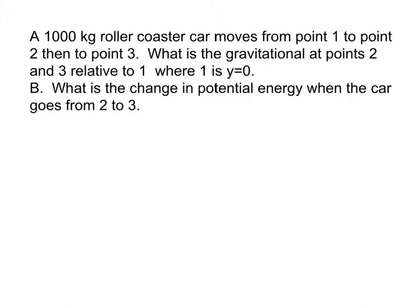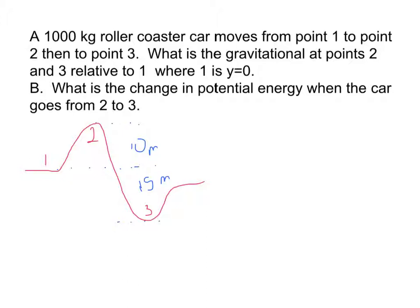A 1000 kg rollercoaster moves from point one to point two to point three. What is the gravitational potential energy at points two and three relative to point one? Let's draw the picture: point one, point two, point three. From point one to point two is 10 meters up, and between the dotted lines it's 15 meters down.